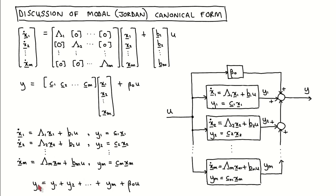The output of the full system is then given by the sum of the outputs of the subsystems plus beta 0 times U, which we can easily verify by looking at the output equation of the full system.